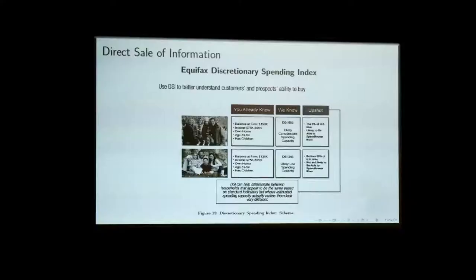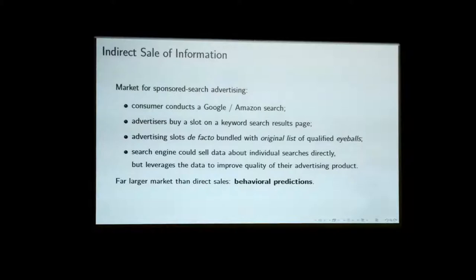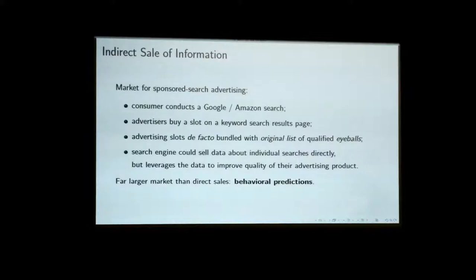When thinking about information today, we want to think not just about the direct sale of information — for example, Equifax allowing advertisers to access information about the credit worthiness or predicted spending of consumers. More importantly, we think about the indirect sale of information happening all the time in sponsored search or other areas. For example, in a search on Google or Amazon, what is offered to advertisers is a bundle — a consumer together with the particular characteristics that the advertiser specified it wants to reach. So we're not just selling a list of interested clients but combining individual data with specific advertiser-desired characteristics, leading to behavioral predictions.